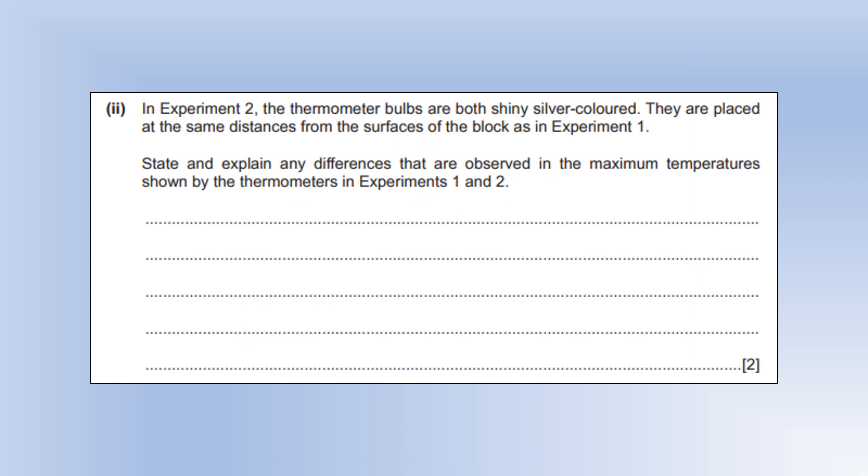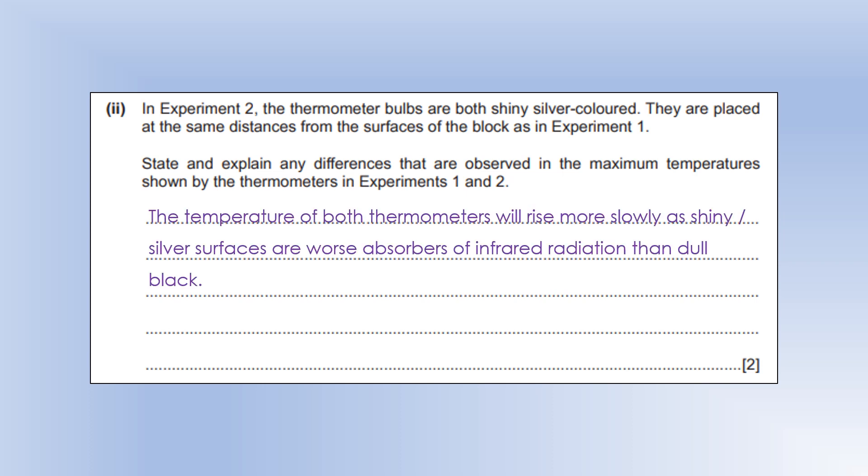Experiment two, thermometer bulbs are both shiny silver coloured. They are placed the same distances from experiment one. State and explain the differences that are observed in the maximum temperatures. The temperature of both thermometers will rise more slowly, as shiny silver surfaces are worse absorbers or better reflectors of infrared radiation than dull black is.